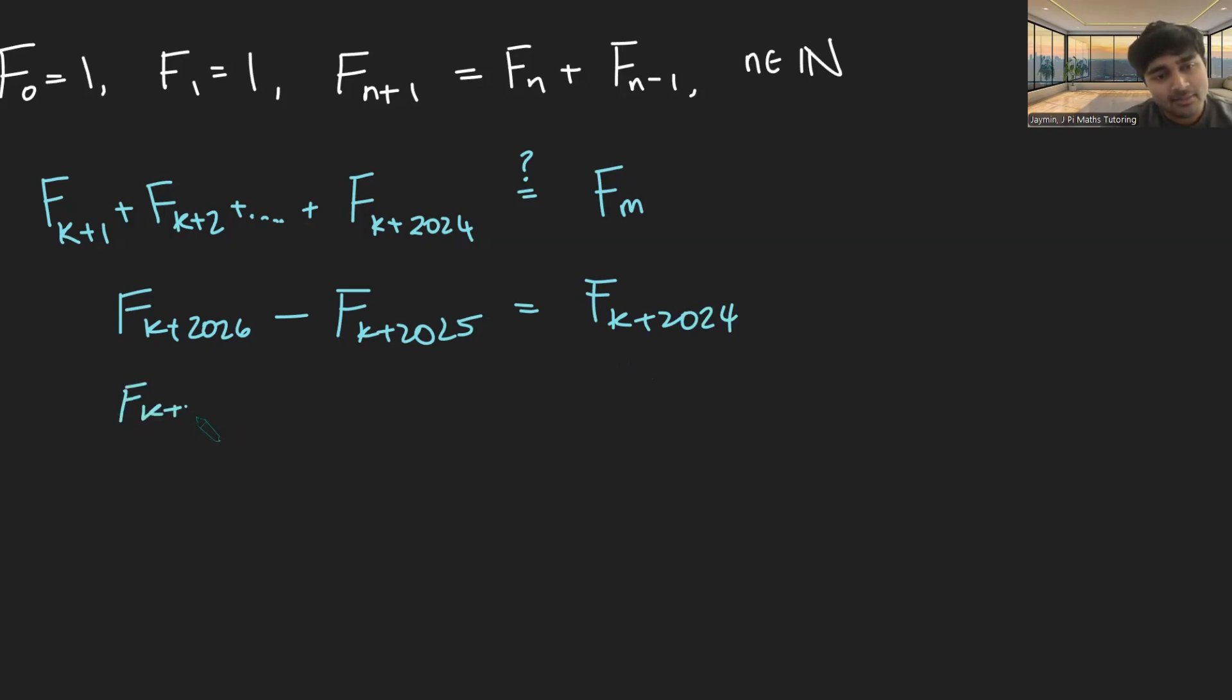Let's now consider F_k+2025 minus F_k+2024. Well, that's going to equal F_k+2023. And I'm going to keep doing this, looking at the difference between consecutive Fibonacci numbers until we get down to F_k+3 minus F_k+2, which will equal F_k+1.